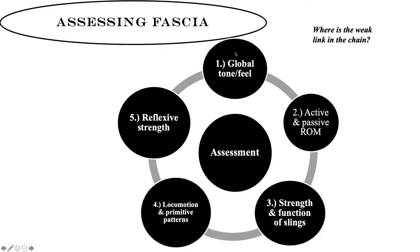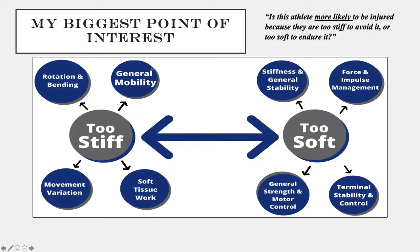Where's the weak link in the chain? My assessment gets a global feel — is somebody super bound up or super lax everywhere? Active versus passive ranges of motion: with passive range of motion we're looking at tissue extensibility and pliability, whereas with active range of motion we're looking at motor control, stability, strength, and function of the slings. How do they look in locomotive or primitive patterns, and their ability to produce reflexive strength? My biggest point: too soft versus too stiff — is this athlete more likely to be injured because they're too stiff to avoid it, or too soft to endure it?